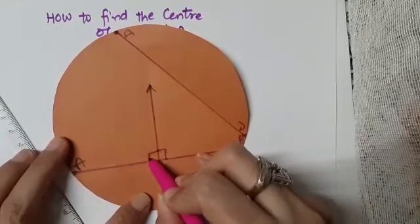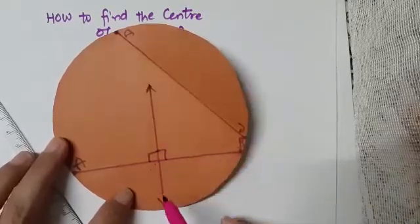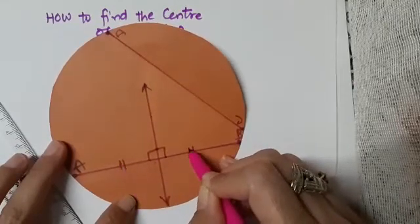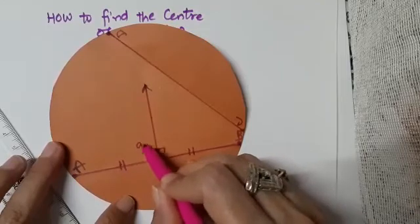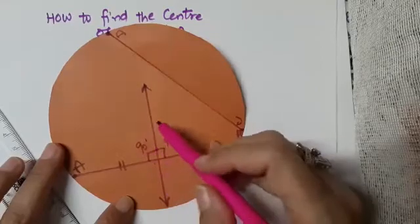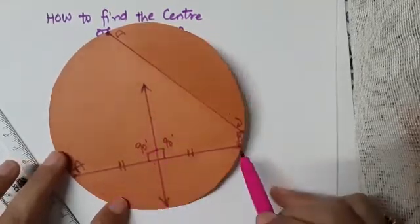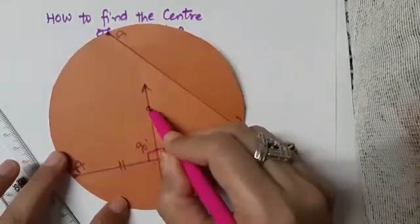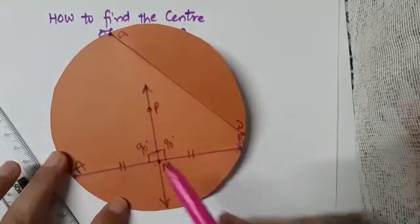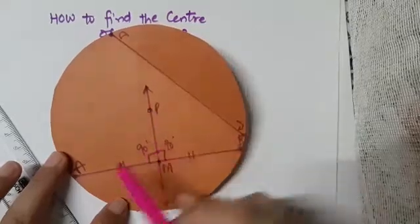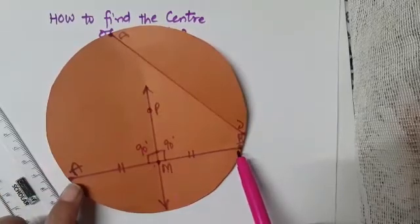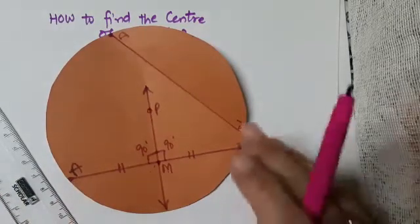This crease represents the perpendicular bisector of AB — a line which bisects the segment into two equal parts and makes a 90-degree angle with it. I name this as PM, where M is the midpoint of AB and PM is perpendicular to AB. So we have the perpendicular bisector of the first chord AB.